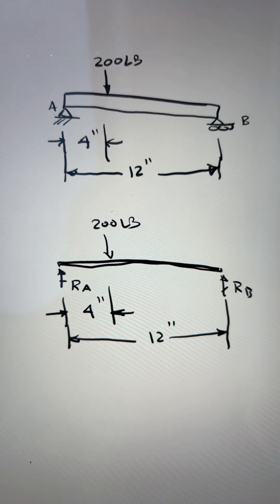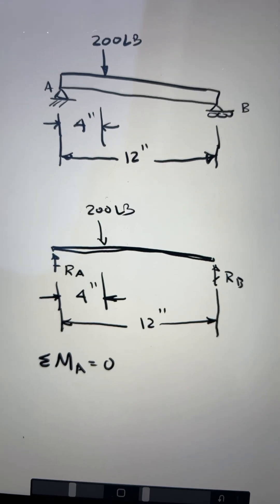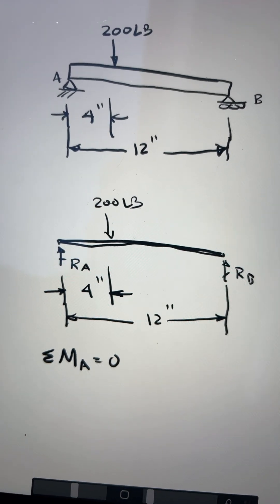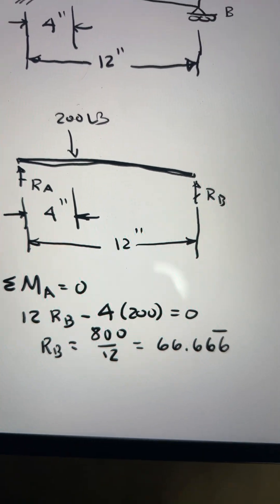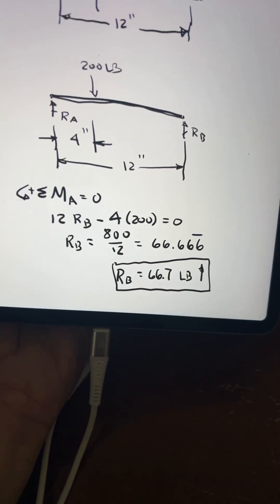Now we sum our moments about A. But you should always show what direction is assumed positive like this. And continue. Engineering students should box their answer. Like so.